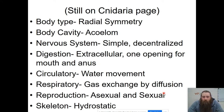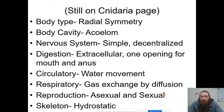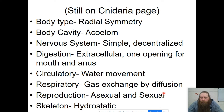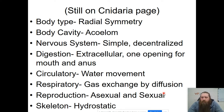Cnidarians all have radial symmetry — they have a set point in the middle and everything radiates around that point. They are acoelomate, so they don't have body cavities. They have a simple decentralized nervous system with no big brain. They do have extracellular digestion and they have one opening — think about jellyfish, it's like an umbrella closed on top with just the one opening. Their circulatory system is based on water movement, they breathe by diffusion, and they can undergo sexual or asexual reproduction. Their skeleton is hydrostatic, which is water under pressure in set areas.